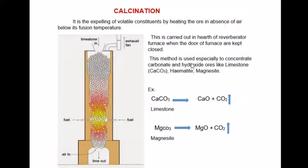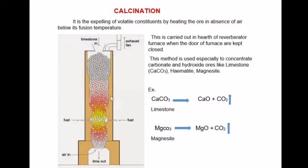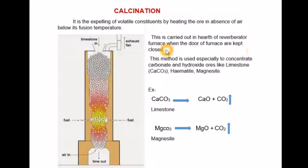Calcination is the process of heating the ore in the absence of air below its melting point. In the calcination process, you have to heat the ore in absence of air below its melting point. Since the process is carried out in the absence of air, the doors of the furnace are kept closed.